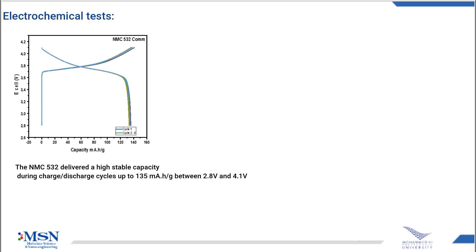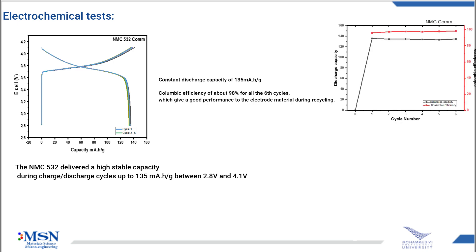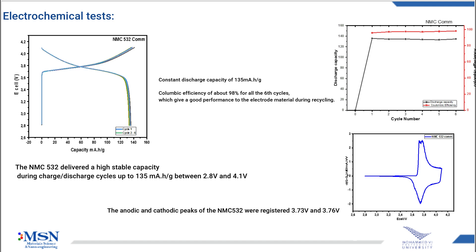Between 2.8 volts and 4.1 volts during all six cycles, with a coulombic efficiency of about 98%. Also, as you can see in the curve, the anodic and cathodic peaks registered at 3.73 volts and 3.76 volts respectively.